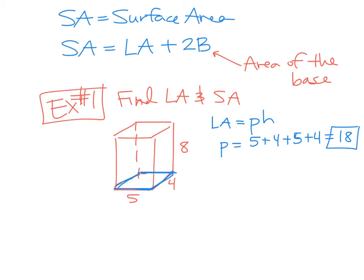It's the distance between the two bases. So your H is 8. So if we're using LA equals pH, then we're saying lateral area equals 18 times the height, which is 8, and 18 times 8 is 144. How do you label area? Units squared.